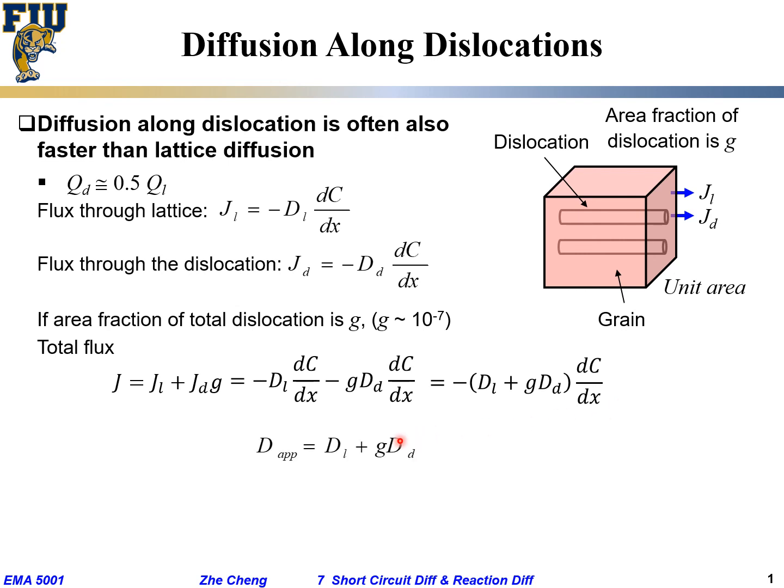Now we are going to have this relationship. If similarly we define a so-called apparent diffusion coefficient for this single grain that has dislocation within it, it will be the lattice term plus the contribution from dislocation.